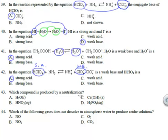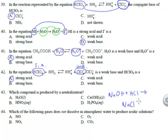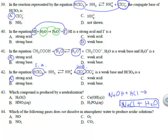Which compound is produced by neutralization? Remember: neutralization — acid + base → salt + water. The very typical example is sodium hydroxide (NaOH) combining with hydrochloric acid to form table salt (NaCl) and water. Of the products, water is the one present as an answer option here.